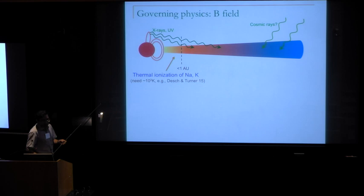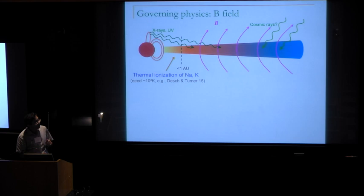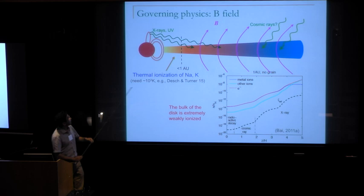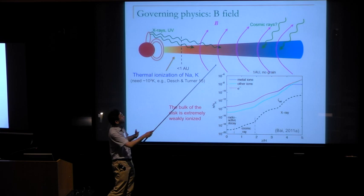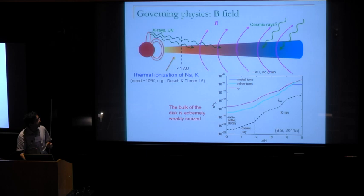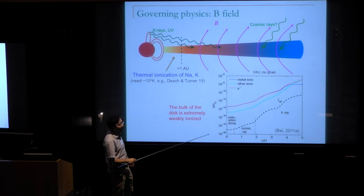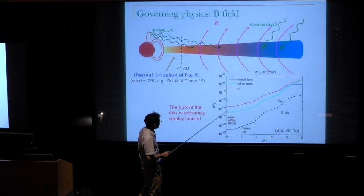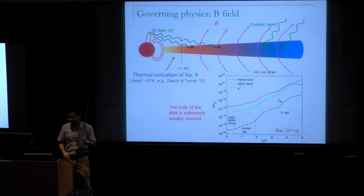Another piece of governing physics, probably more important and widely discussed, is how magnetic fields and gas are coupled. Magnetic fields only couple with charged species, so this has to do with ionization. Unless you have thermal ionization, the bulk of the disk has to rely on external sources — mainly stellar X-ray and UV, and possibly cosmic rays if they are not being excluded by stellar or disk winds. Typical ionization fractions are around 10⁻¹⁴ at 1 AU in the mid-plane, increasing to only 10⁻⁸ to 10⁻⁷ toward the surface. This is an extremely weakly ionized system where gas and magnetic fields are not well coupled.